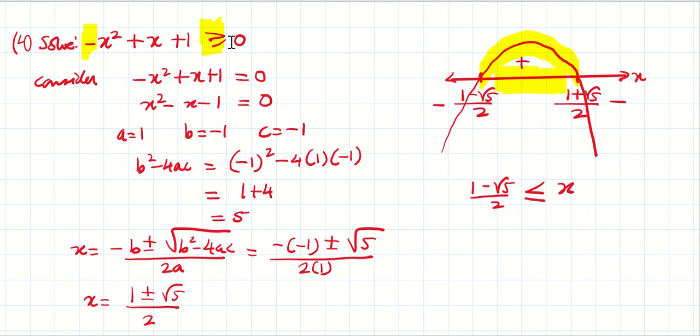So (1 - √5)/2 ≤ x because there's less than equal to here. So you put less than equal to x, less than equal to (1 + √5)/2. So the answer is between this and this. (1 + √5)/2.